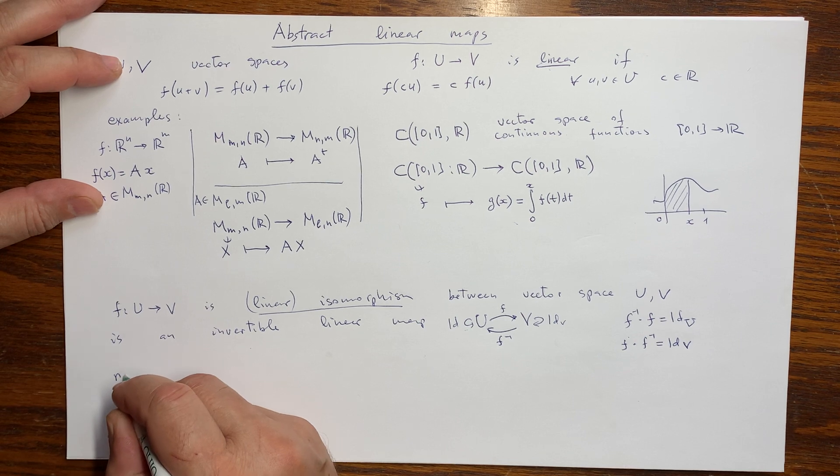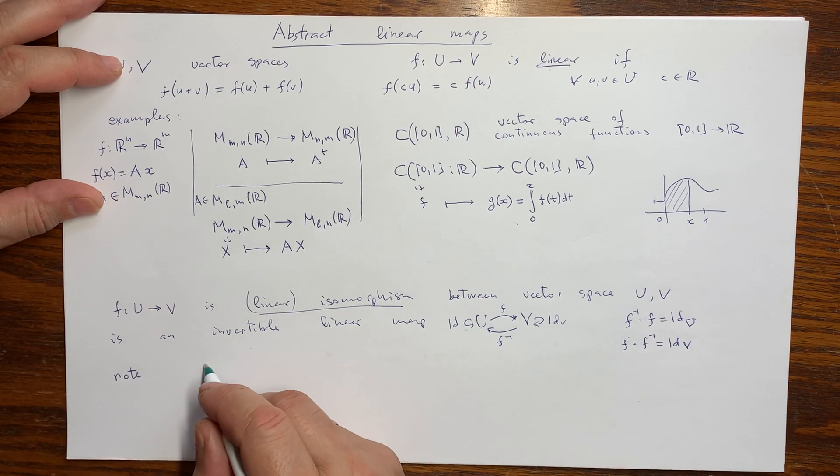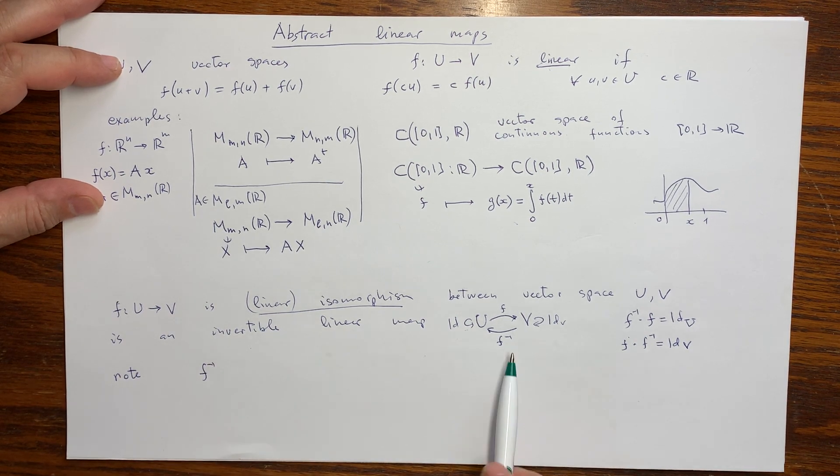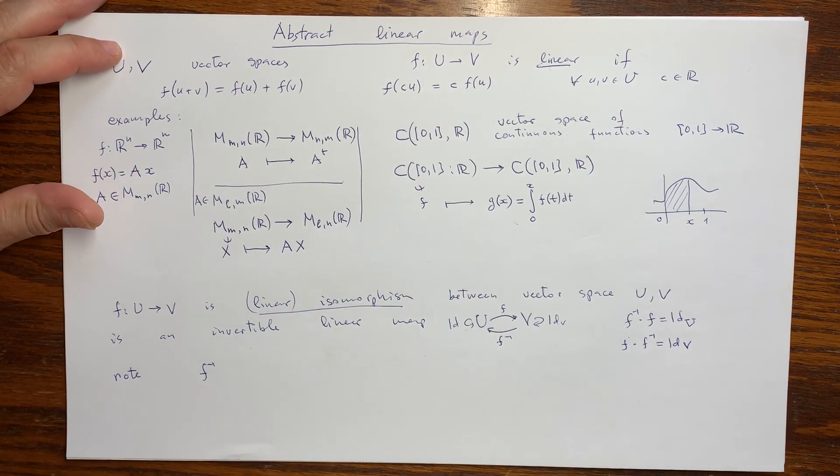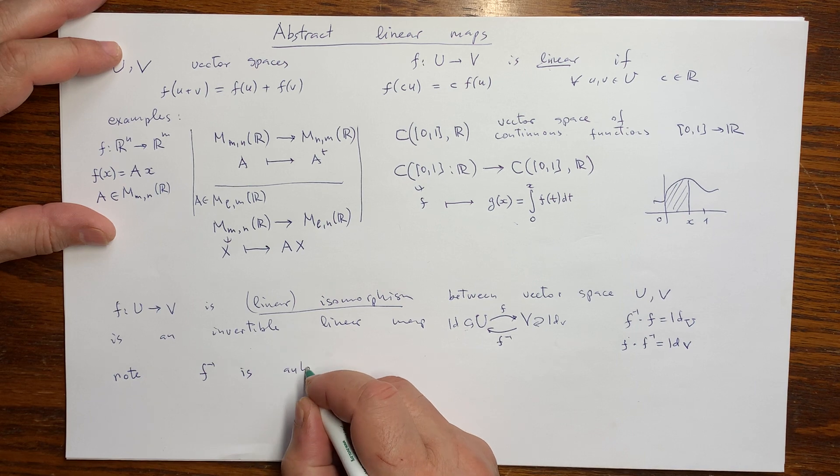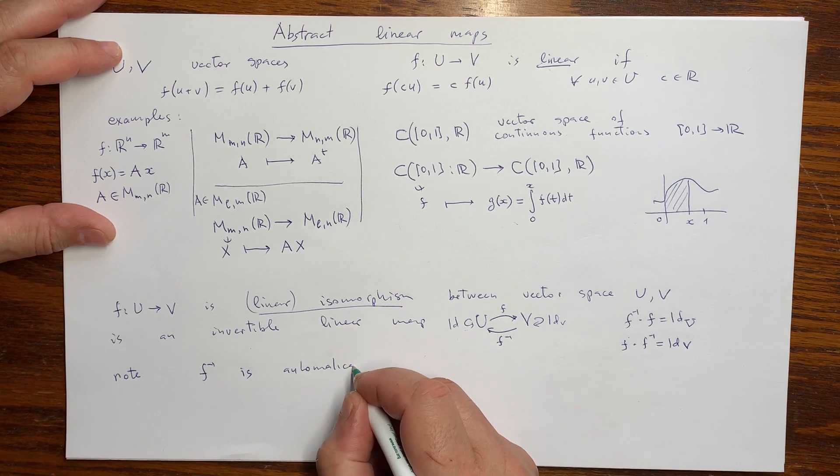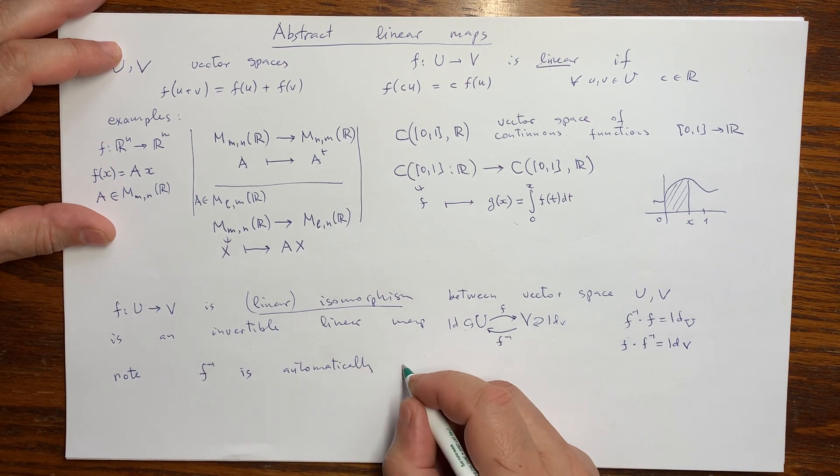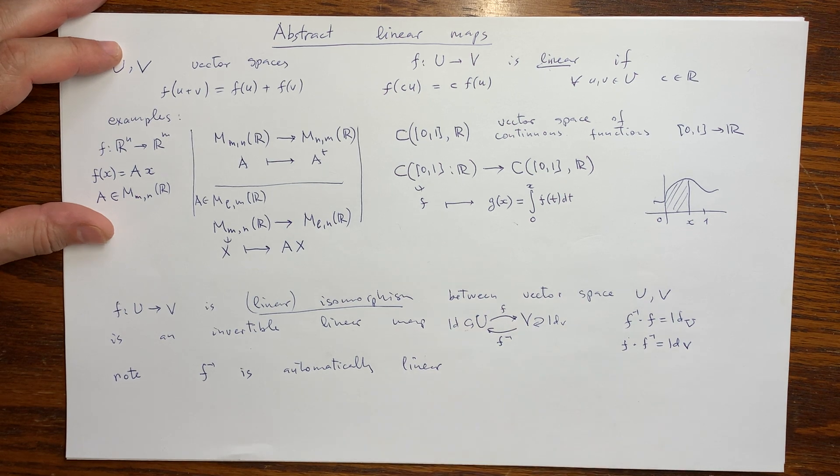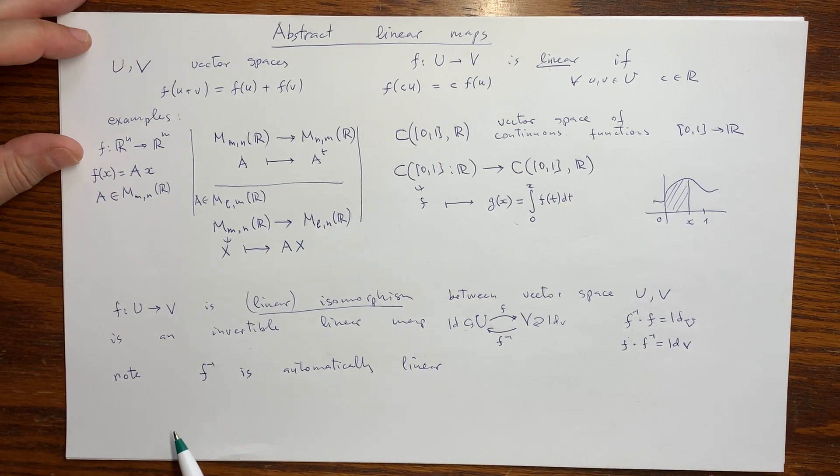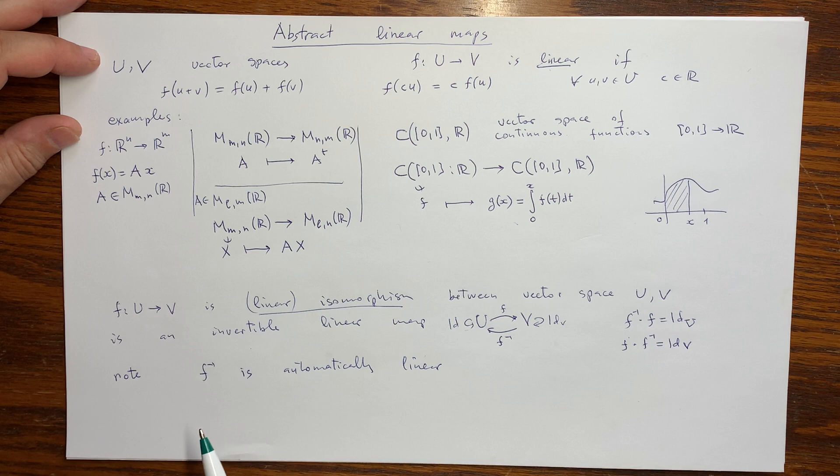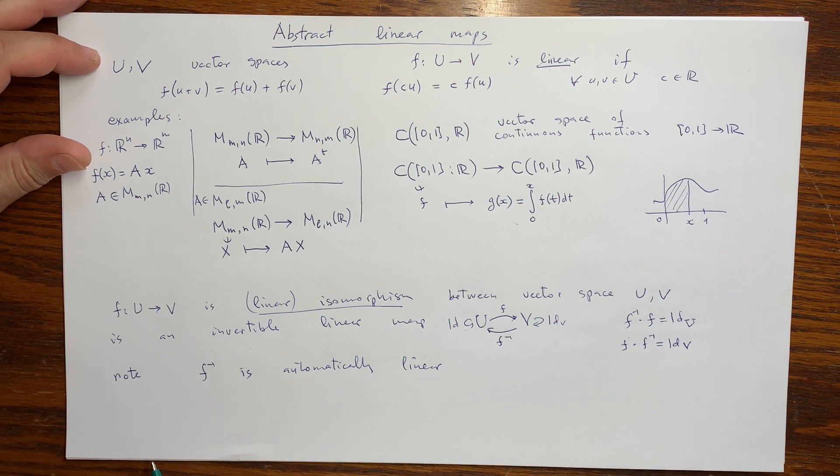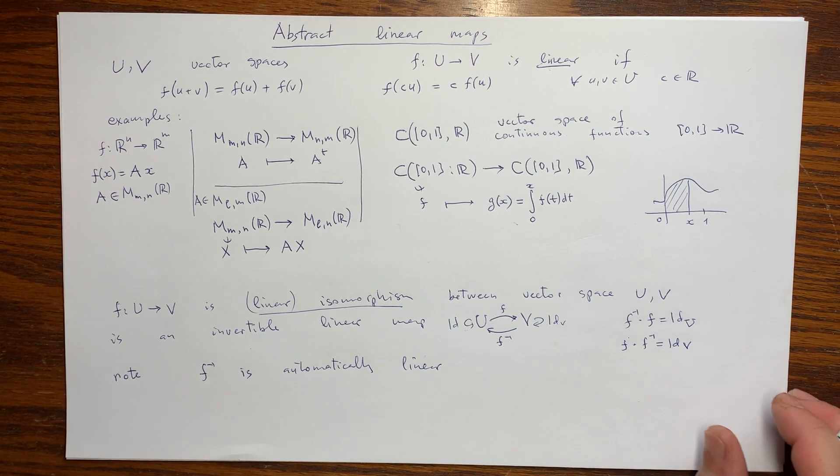And one last remark. We don't need to ask that the inverse is also linear, it also satisfies these two conditions. Meaning that automatically linear, meaning that we don't need to ask, it will have to satisfy these two conditions. Proving that is again a formal, but an interesting exercise. Highly recommended.